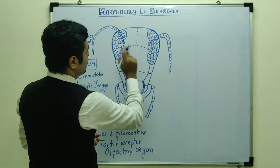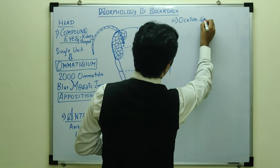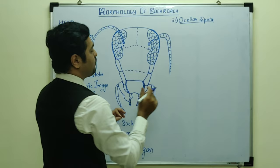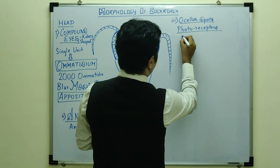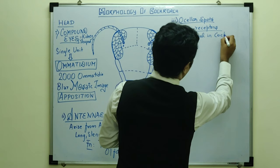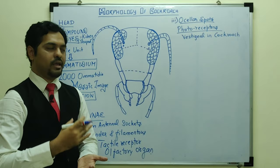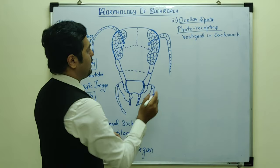The third structure is the ocular spots, also called fenestra. These are white ocular spots present below the antennae. They mainly act as photoreceptors — they detect light. However, they are mainly considered vestigial in cockroach. If asked specifically about function, the ocular spots act as photoreceptors.